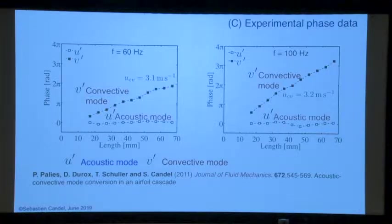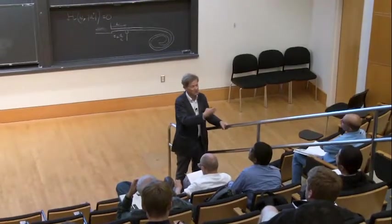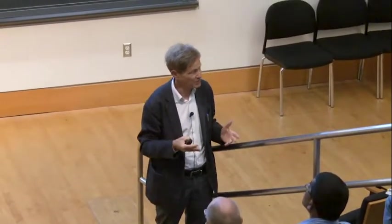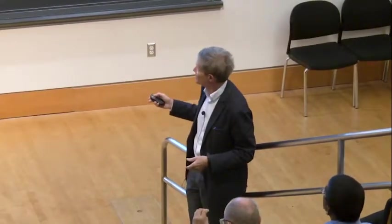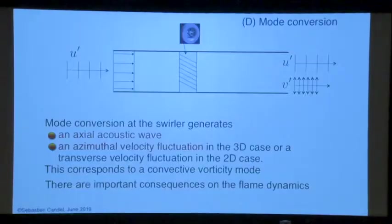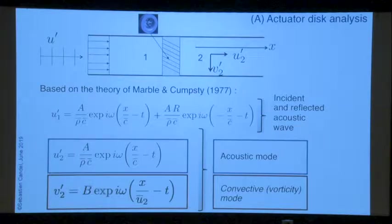U-prime is an acoustic mode — the phase doesn't change because it's acoustic. But v-prime is associated with convective velocities, and this is indeed what is observed. You see that this changes with the length, so you have a convective mode again. The swirler transforms the acoustic wave into an acoustic wave, but you also have vortices. You cannot solve the actuator disk problem without the vorticity wave. The level of b is obtained from these calculations — b can be obtained from a, and is directly related to a over rho·c. b is just the tangent of the angle of these blades.